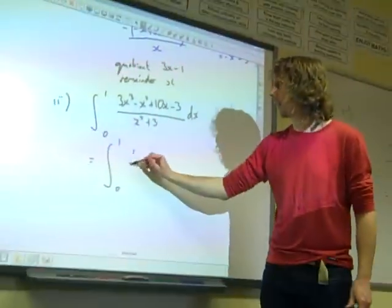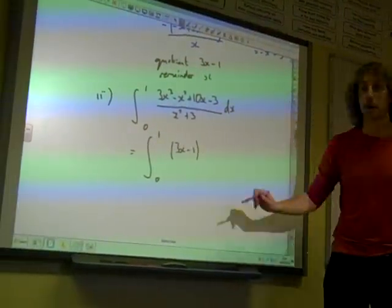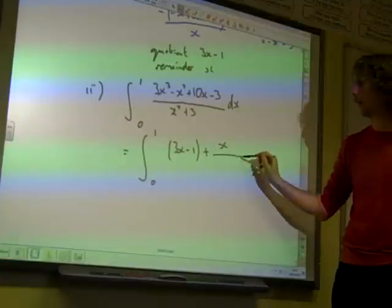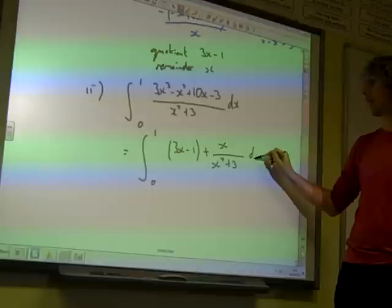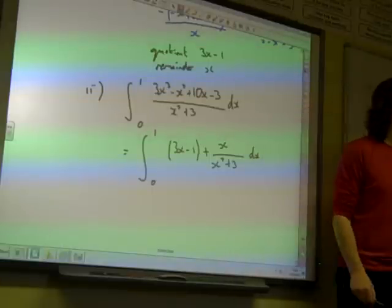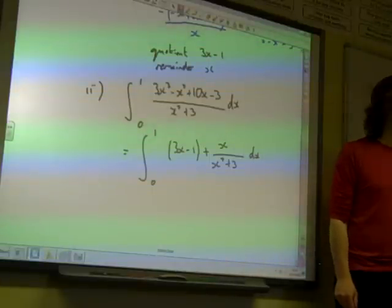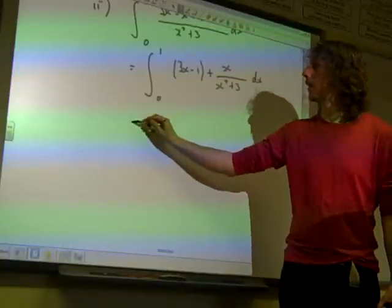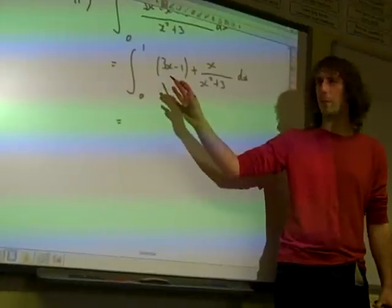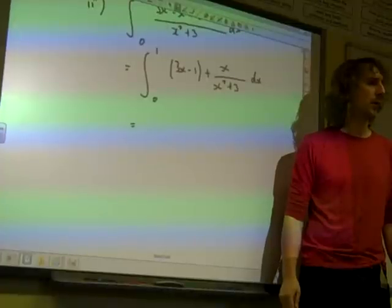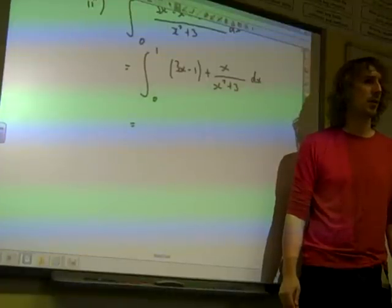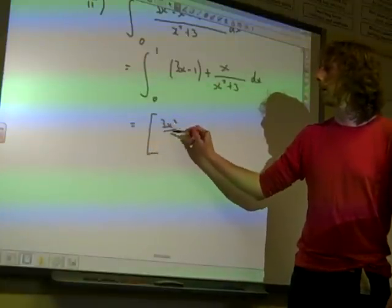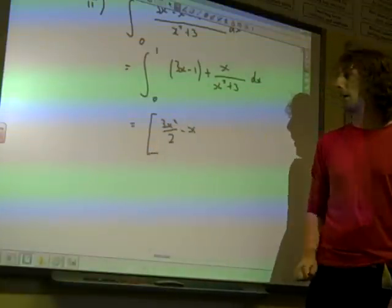So when we write this, we've got a quotient of 3x minus 1 plus a remainder of x, but the remainder is x over (x² + 3). That's the integral we're now doing. The first part is fine - if we integrate 3x minus 1, we get 3x²/2 minus x.